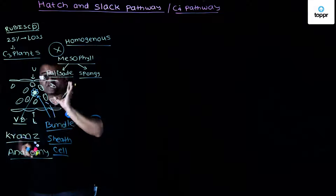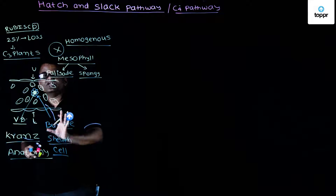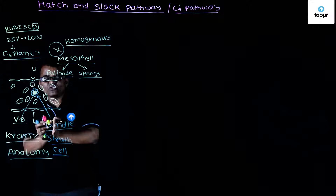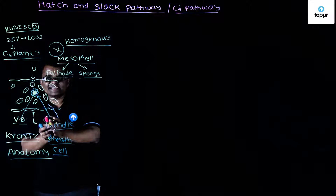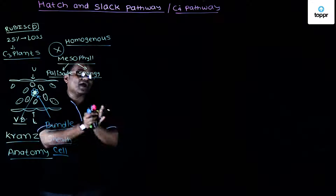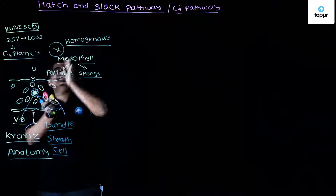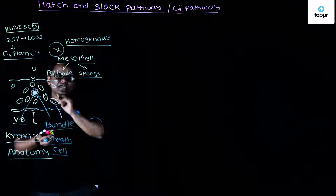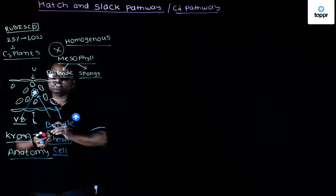This special arrangement is called Kranz anatomy. Kranz anatomy is a special modification observed only in C4 plants — those plants that fix carbon dioxide into carbohydrates using the Hatch and Slack pathway.